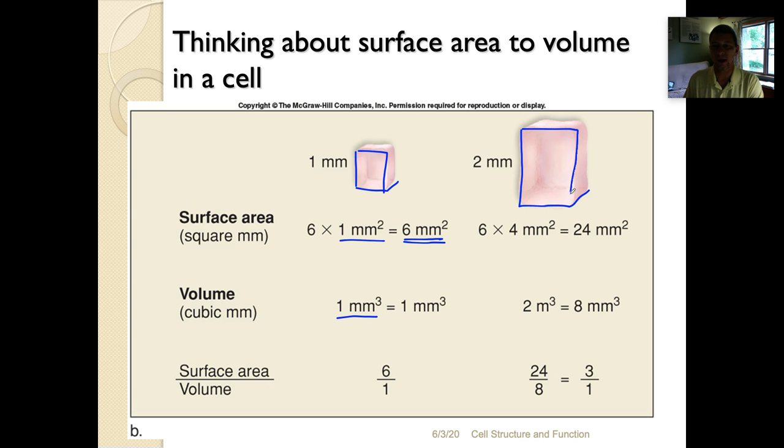Now if I calculate the total volume, it's two times two times two or eight cubic millimeters. Now the ratio of surface area to volume is 24 to 8, which reduces to three to one. And so the ratio has now gotten smaller. So the larger a cell gets, the smaller the surface area to volume ratio becomes, and that decreases the efficiency of diffusion into and out of a cell.